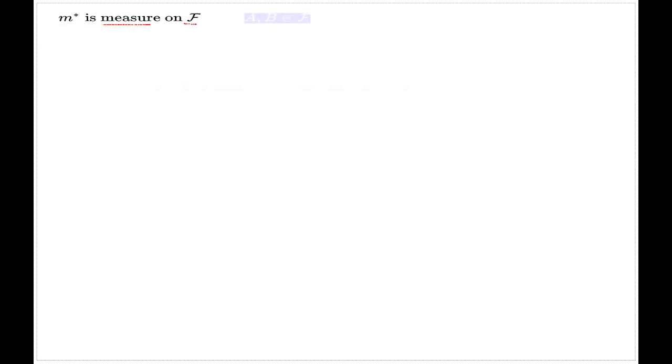So the content of the proof is this: if I start off with two elements of my σ-algebra, then the external measure of a disjoint union like this will be the sum of individual measures. Again, this is the content of my proof, so I put it under the question mark.